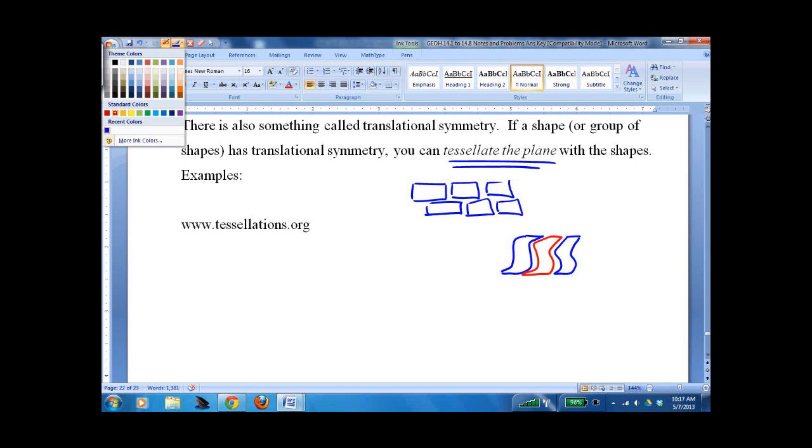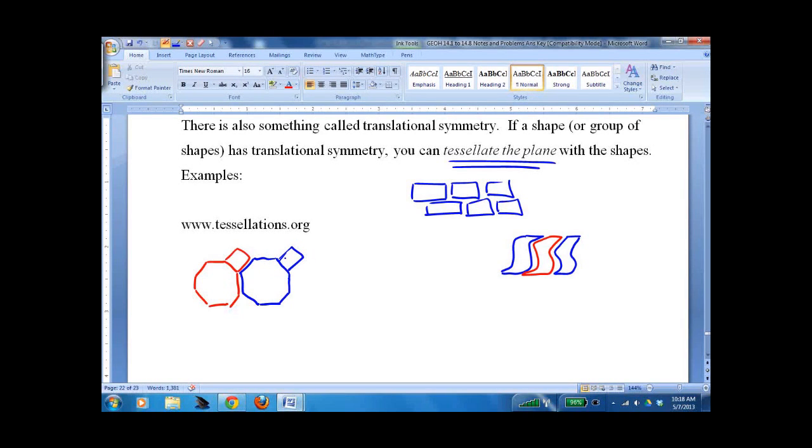Some of the more complicated ones are things like the octagon with the square stuck to it. And you'll see this in patios a lot. So you put another octagon here with the square stuck to it. And you keep doing that forever.